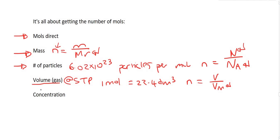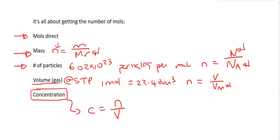For concentration, that also links to moles because we know C equals n over V. So what we can see is that it's all about moles — here we have moles, here we have moles, here we have moles, and there we have moles. Chemistry is all about getting moles.